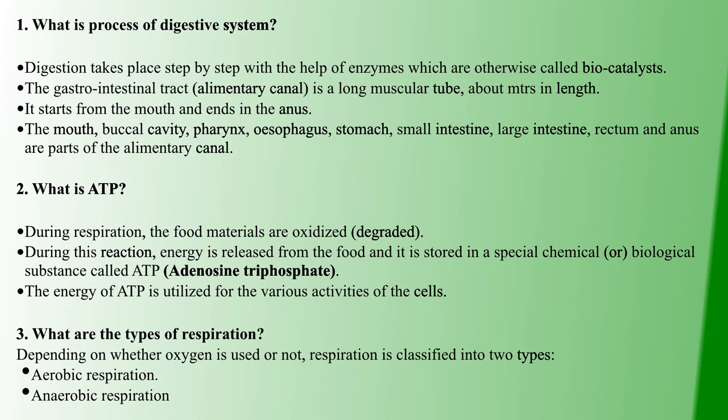The parts of the alimentary canal are: mouth (or buccal cavity), pharynx, esophagus, stomach, small intestine, large intestine, rectum, and anus. This is how food is digested. These are the parts of the alimentary canal in the digestive system.